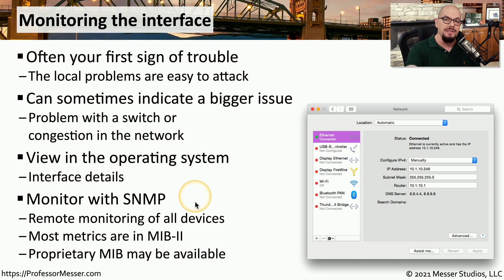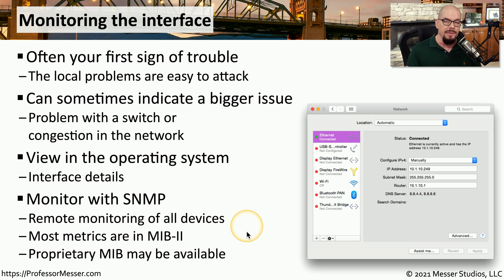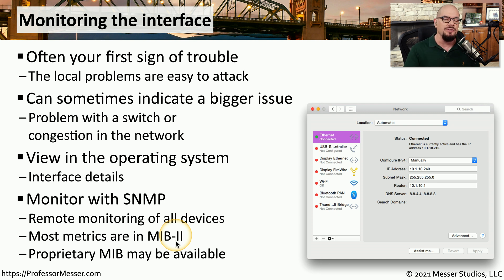SNMP allows you to query the statistics on a device. The device responds with those statistics, and you can continue querying over time to build a trend of what's happening on that system. Many devices use a standard database for these statistics called a management information base, or MIB. One standard MIB is MIB2, which you should be able to query on any compatible device. Many devices also include their own proprietary MIB, so a printer, firewall, or switch will have specific statistics relevant to that device type.